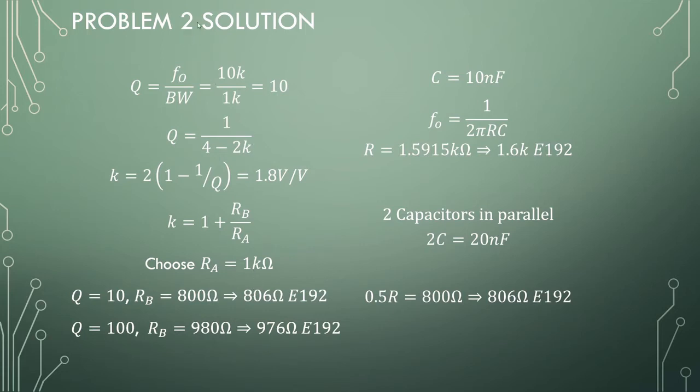The solution is the same as the previous one. Calculate the Q factor, we get it as 10. That is 1.8 volt gain. Choosing resistor A 1 kilo ohm, we should end up with 806 ohm resistor. For a Q of 100 over 100 Hz bandwidth, we should end up with 976 ohm resistor. This Q to resistor B relation is exactly the same as the first problem. For the resistors and capacitors on this side, choosing 10 nF, we get the 1.6 kilo ohm resistor. And that goes over to having a 20 nF and 806, or if we use a parallel combination, 800 ohms for half the resistance.